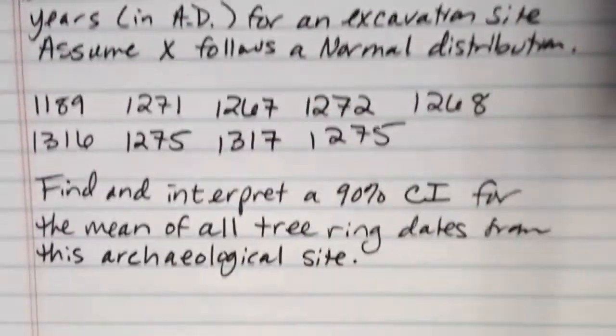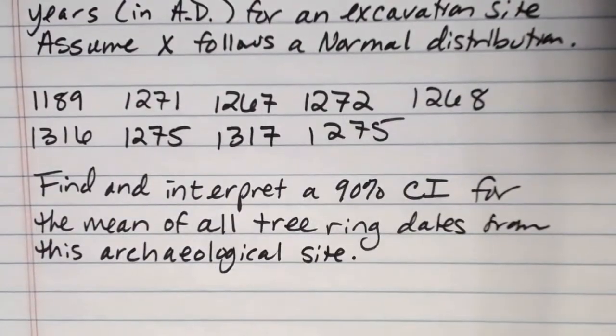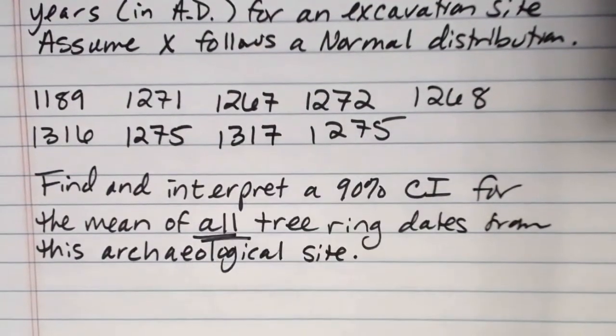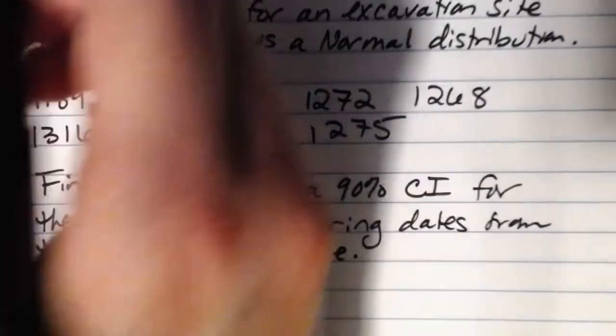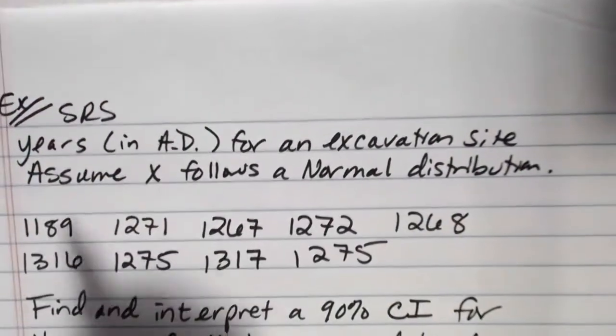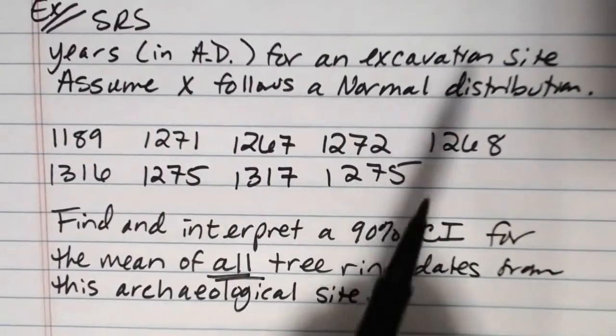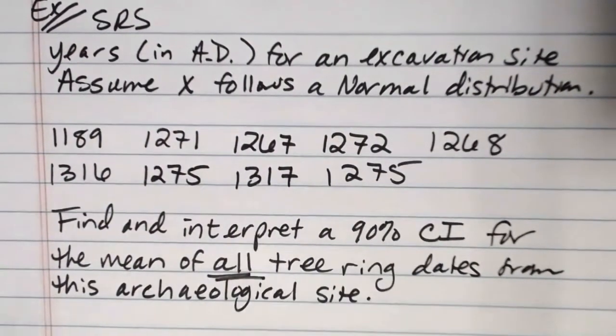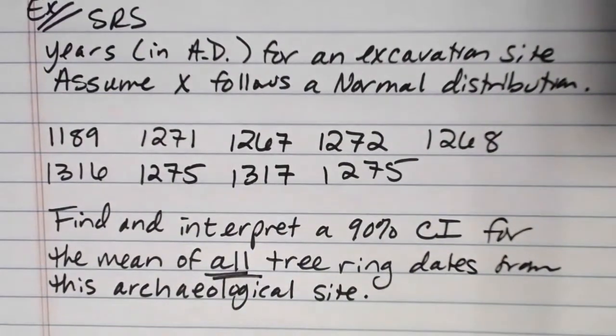We just had a sample. Right? We had a sample of nine different trees. We want to find the mean of all tree ring dates. Or we want to use the sample data to estimate the mean of all of them. Obviously, it doesn't make any sense for us to cut into all the trees, find the tree ring data, and do all of that. That would not be a productive use of our time or resources. So instead, we took a random sample. Oh yeah, this was a simple random sample. We took a simple random sample of trees. We sampled nine trees. We want to use that sample to estimate the mean of all tree ring dates.